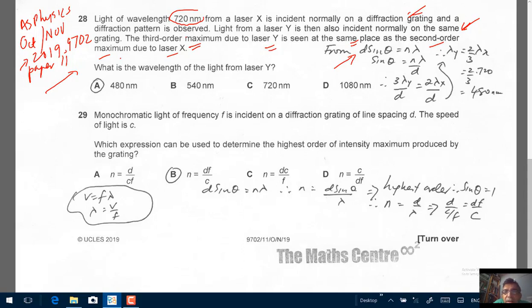So let's follow my working here. Of course, we are going to use the diffraction grating formula, d sine theta equals to n lambda, so sine theta is n lambda over d. Now remember the angle is the same for the third order maximum for Y and the second order maximum for X. So we can write, this is the sine theta for the third order maximum, this is the sine theta for the second order maximum. The angle is the same, therefore we can equate this. Remember we are using the same diffraction grating, so d is the same.